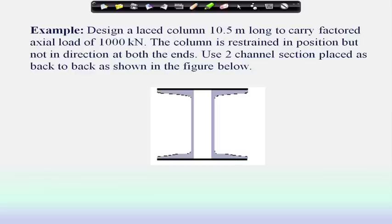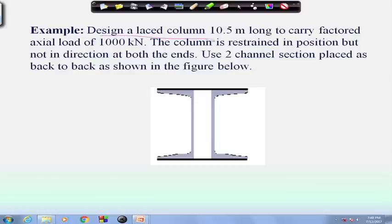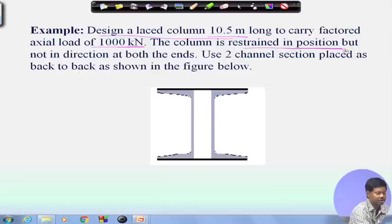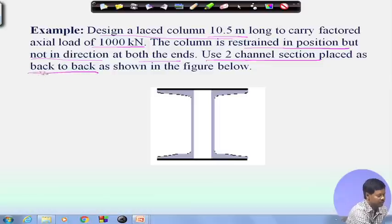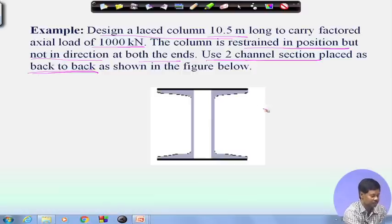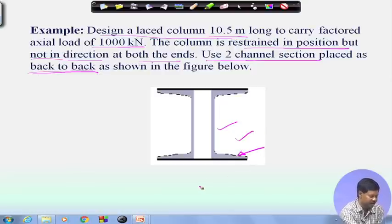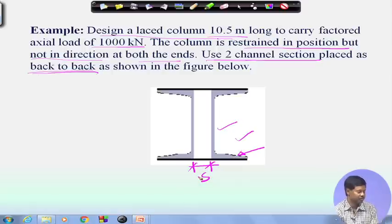In this example, we have to design a column 10.5 meters long to carry a factored load of 1000 kN. The column is restrained in position but not in direction at both ends. It has been specified to use two channel sections placed back to back. We need to find the section size and the spacing S between the two channel sections.